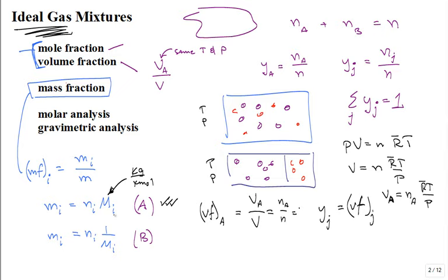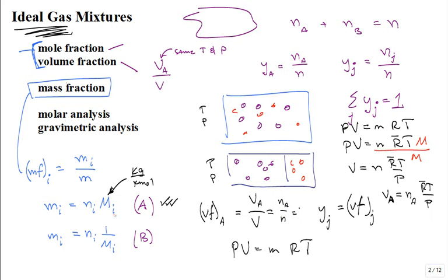Some things you shouldn't rely on equation sheets for. One way to remember: M has units of kilograms per kilomole, and I track units to avoid errors. Another way: from PV = MRT, where R = R̄/M, you can trace that N times M gives mass, and R̄ divided by M gives the specific gas constant R. The best approach is to set up a table of mole fractions and do an example.